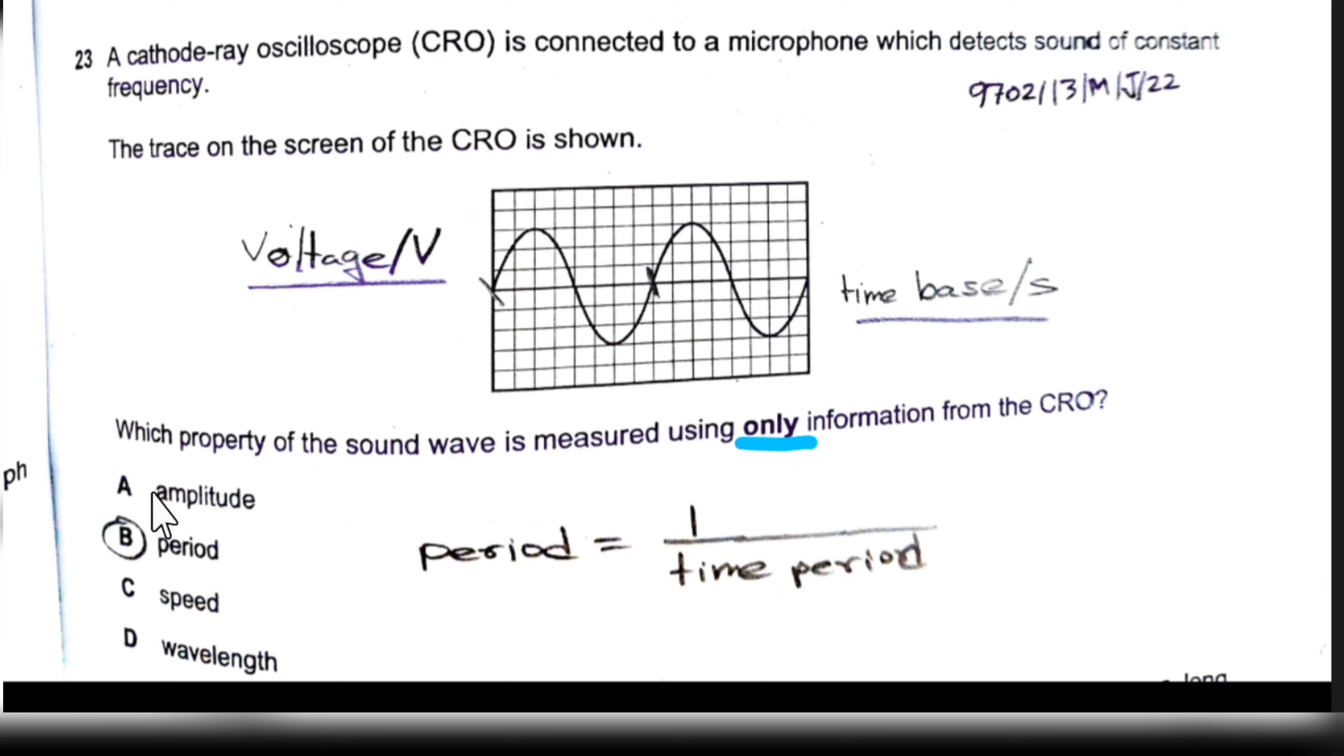We cannot measure amplitude using a voltage-time graph. If we have displacement or distance on the y-axis then we can measure the amplitude. So this would be wrong.